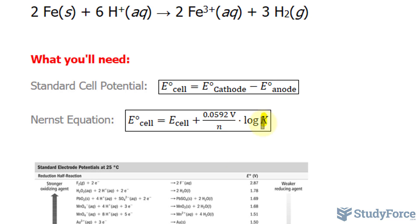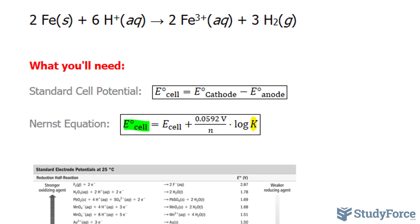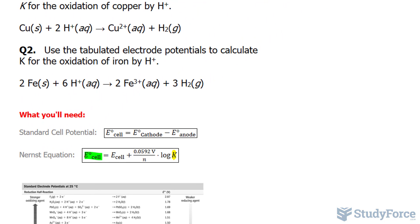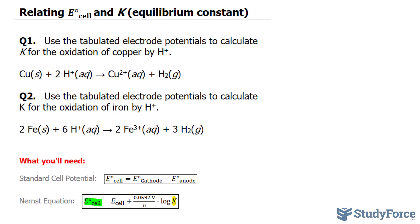So our goal is to isolate for K, but we first need to find this value. And we can do that by looking at the equation and determining what is being oxidized and what's being reduced.